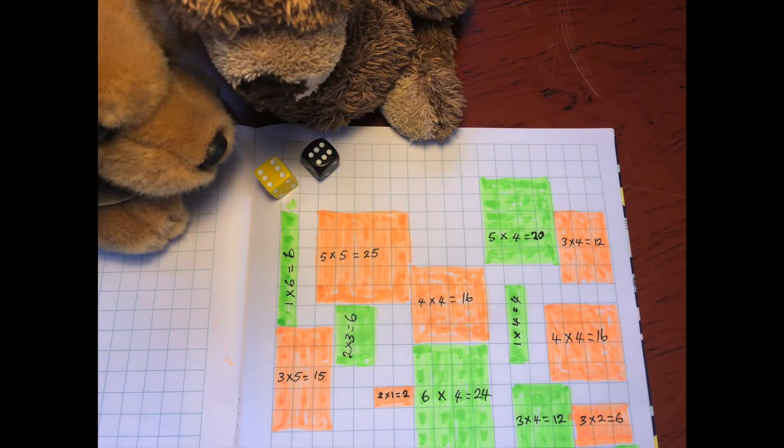Murphy is excited. Monty has just thrown two sixes. Is there space on this grid to fit an array that is six across and six down? No.